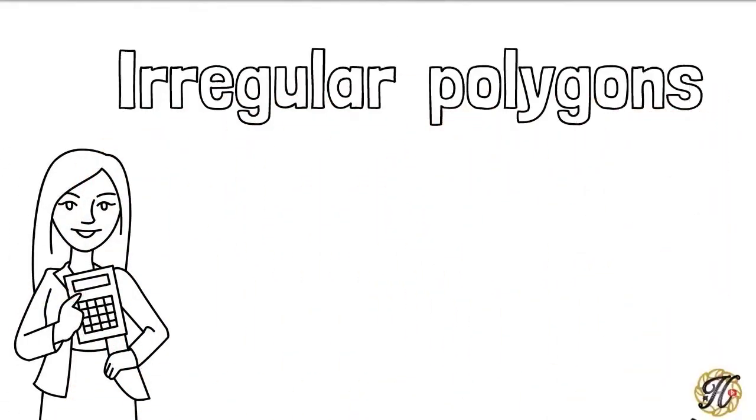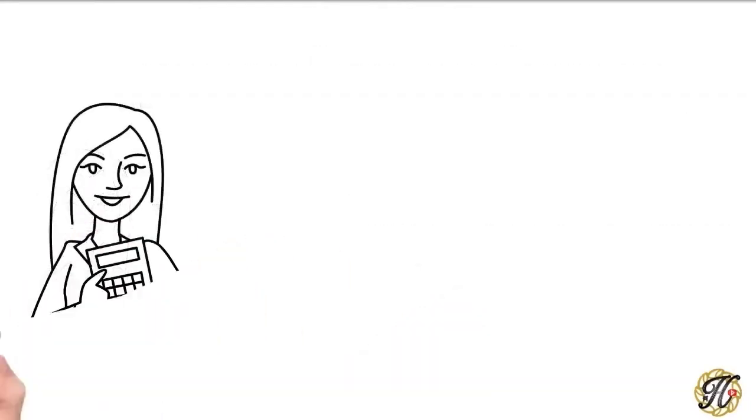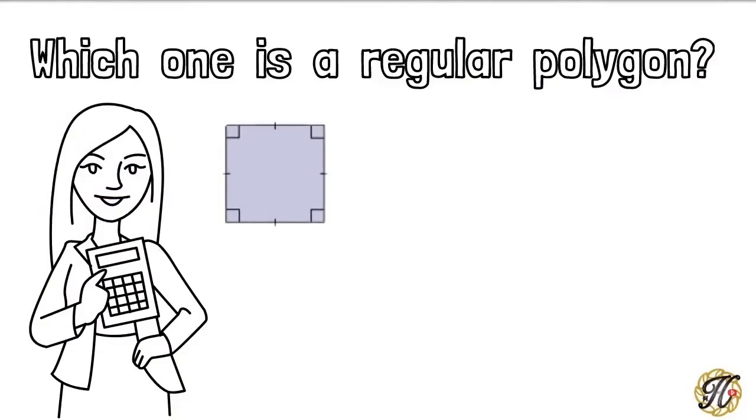Irregular Polygons are polygons with irregular sides. Which one is a regular polygon and which is an irregular polygon?